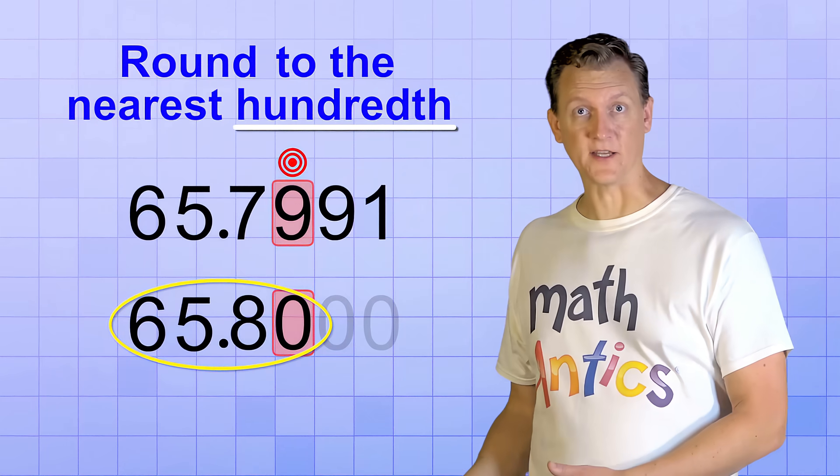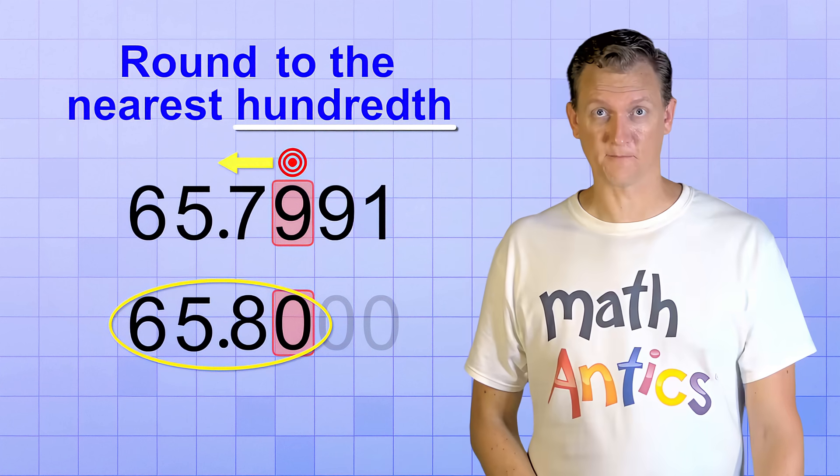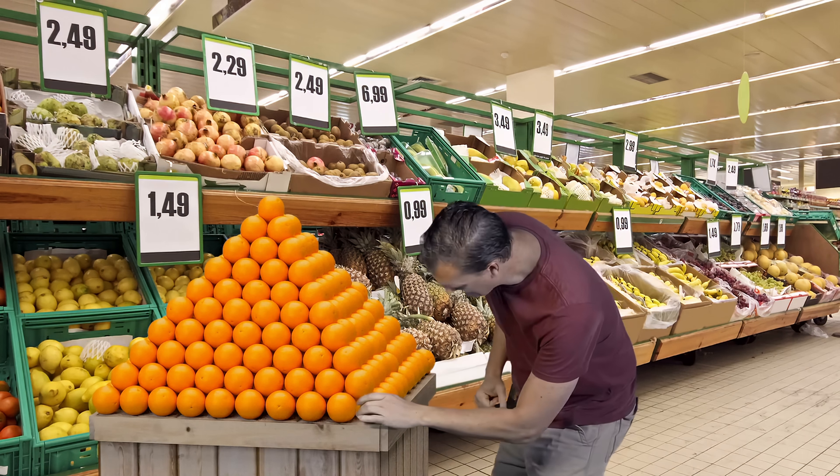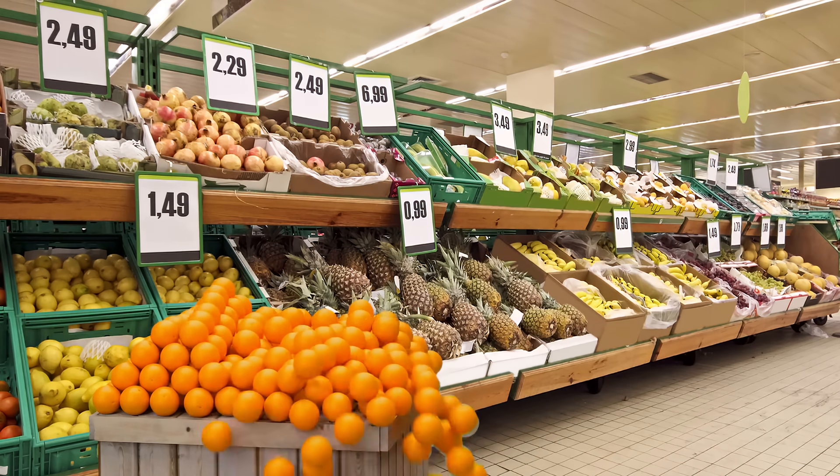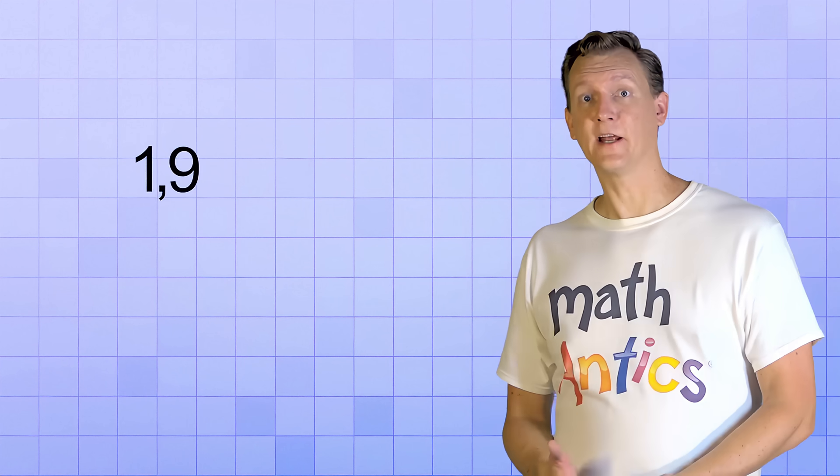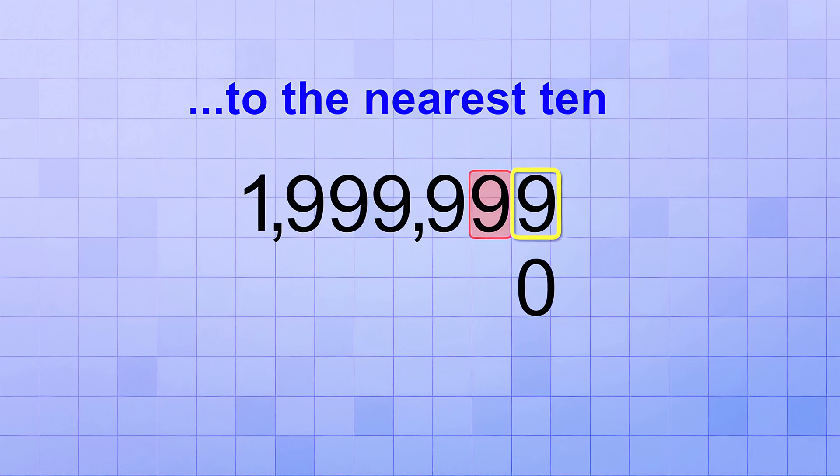As you can see, in some cases, rounding can actually change the digits to the left of the target digit also. It's sort of a domino effect that can happen when rounding numbers. If you have a lot of 9's, rounding can bump them all up like a chain reaction. Like, what if you need to round 1,999,999 to the nearest 10? The 9 in the 1's place tells us that we need to round our target digit up by 1. But it's already a 9, so we need to 0 it and increase the next number place. But that's already a 9. So we need to 0 it and increase the next number place. But that's already a 9. And so the pattern continues until we end up with 2 million as our final rounded number.